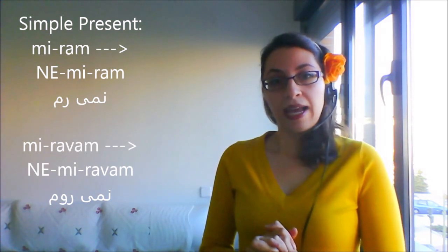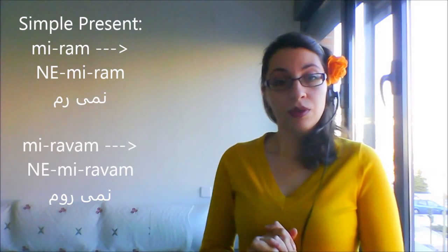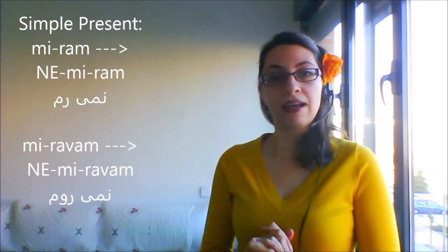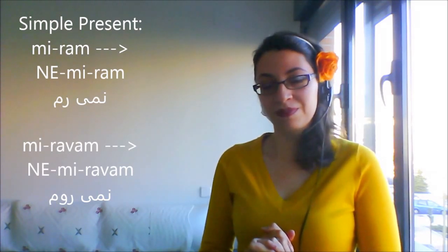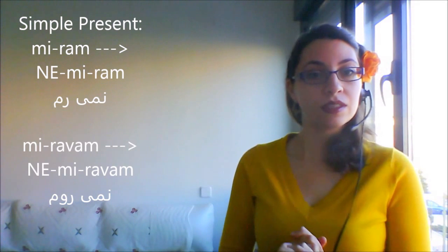'Ne miram' or 'ne miram'. Now let's go to past tense. Simple past: 'na raftam'. Why did we put 'na'? Because the verb 'raftam' doesn't start with 'me', so we make it negative by putting 'na' at the beginning of it.